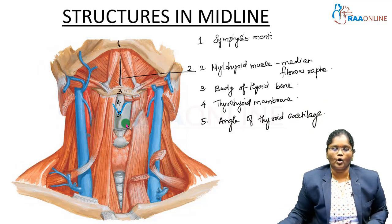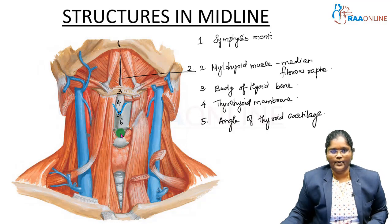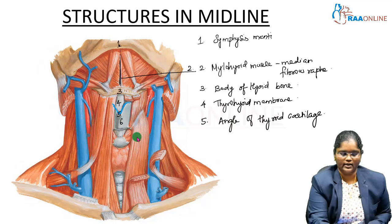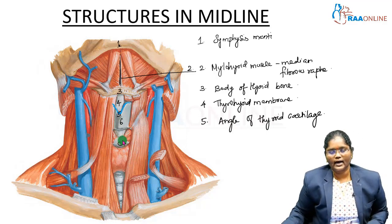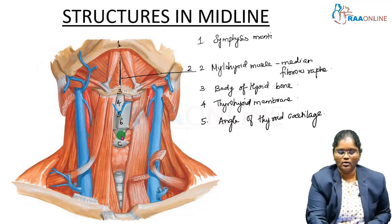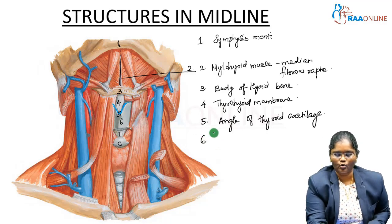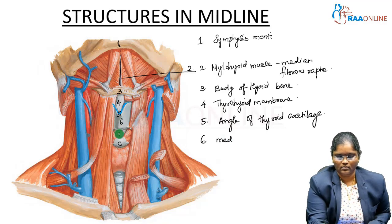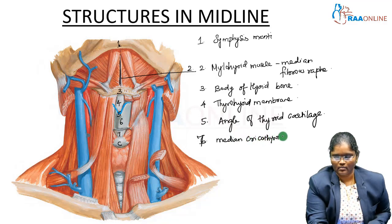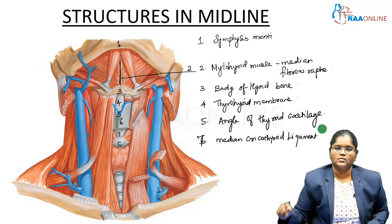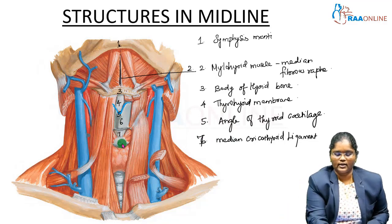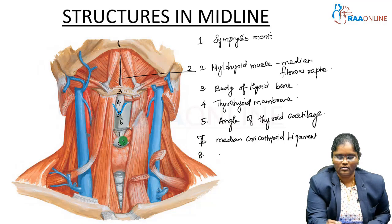Below is the body of the thyroid cartilage. Structure seven is another membrane, thickened in the middle part, connecting the thyroid cartilage to the cricoid cartilage below. It connects the upper border of the cricoid cartilage and the lower border of the thyroid cartilage — the thickened part in the midline is called the median cricothyroid ligament.